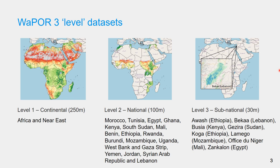Vapo Database has three levels relating to the spatial resolution. Level 1 Continental has a spatial resolution of 250 meters and covers the whole Africa continent and Near East Area. Level 2 National has a spatial resolution of 100 meters and is available for only some countries, as you can see on the map and in the list here.